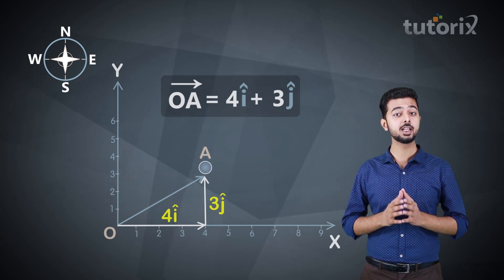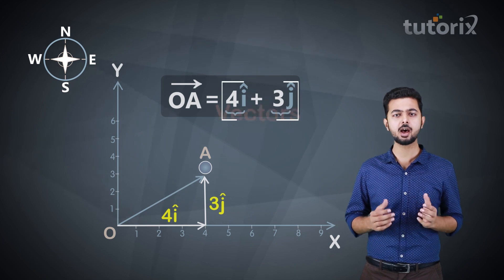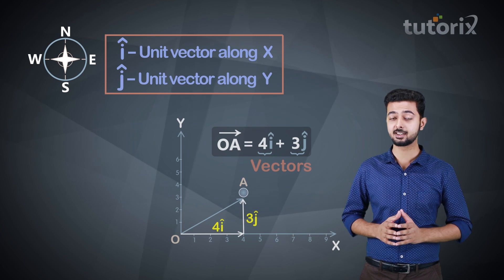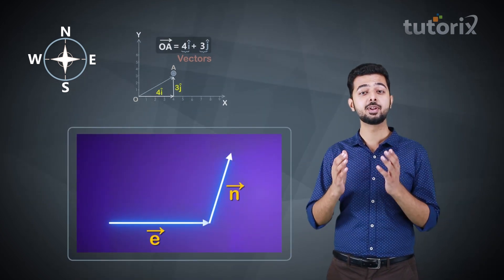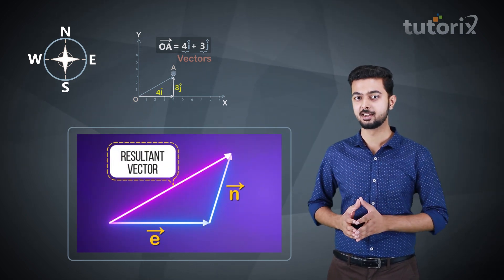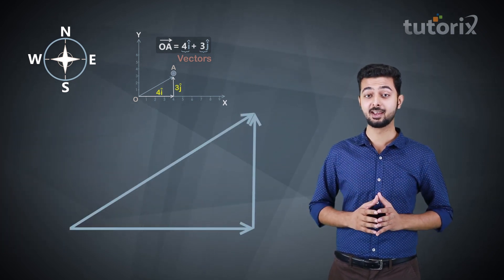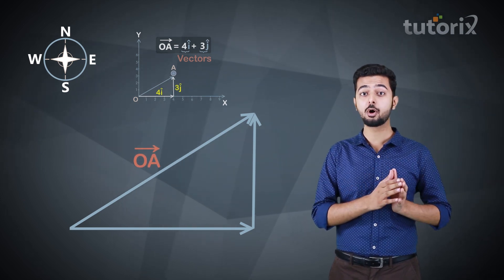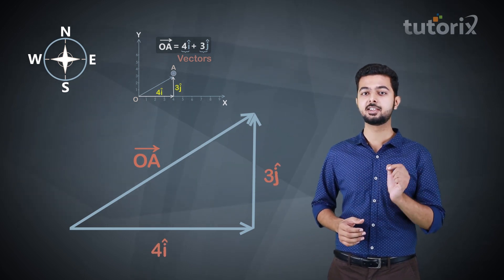Note that the individual components — 4î and 3ĵ — are also vectors. And î and ĵ are the unit vectors along the x-direction and y-direction respectively. In previous videos, we learned to add two vectors to find the resultant vector. In this video, we have done exactly the opposite: we took vector OA and expressed it as the sum of two individual vectors, 4î and 3ĵ.